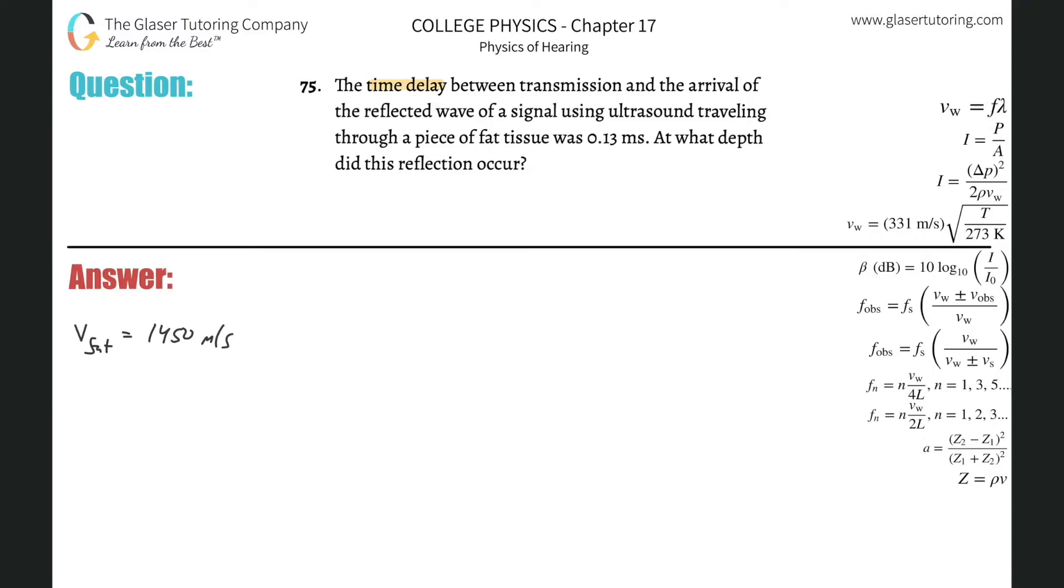Number 75, the time delay between transmission and the arrival of the reflected wave of a signal using ultrasound traveling through a piece of fat tissue was 0.13 milliseconds. At what depth did this reflection occur?